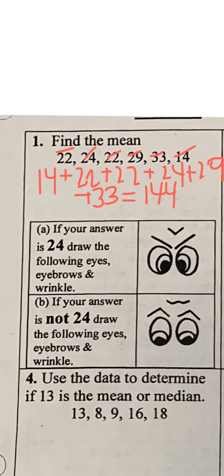So this equals 144 when you add them all together, but I'm not done. I need to divide by however many numbers there are. I have 1, 2, 3, 4, 5, 6. So I'm going to take 144 and divide by 6, and I get 24. So my answer is 24. If your answer is 24, you're going to draw that thing.